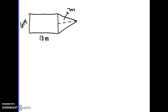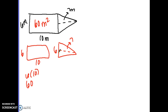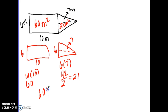For number three, the shape is already cut into a rectangle and a triangle. The rectangle is 6 by 10 — multiply base times height to get an area of 60 square meters. For the triangle, the height is 7 and the base is 6. Six times 7 is 42, and because it's a triangle we divide by 2 to get 21. Adding the two together: 60 plus 21 is 81 square meters.